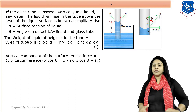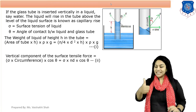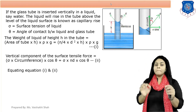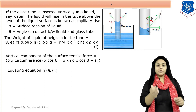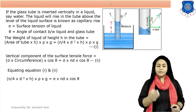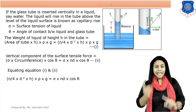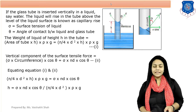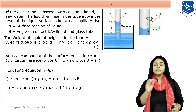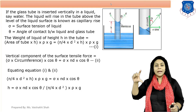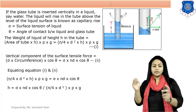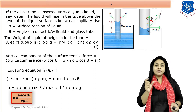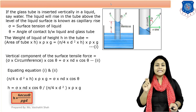In equation 1, the weight W acts downward; in equation 2, Sigma cos theta acts upward. At equilibrium, these two forces must be equal and opposite. Equating equations 1 and 2: (π/4) × D² × H × ρ × g = Sigma × πD × cos theta. Making H the subject — since H is the capillary rise — we get: H = (Sigma × πD × cos theta) ÷ [(π/4) × D² × ρ × g].